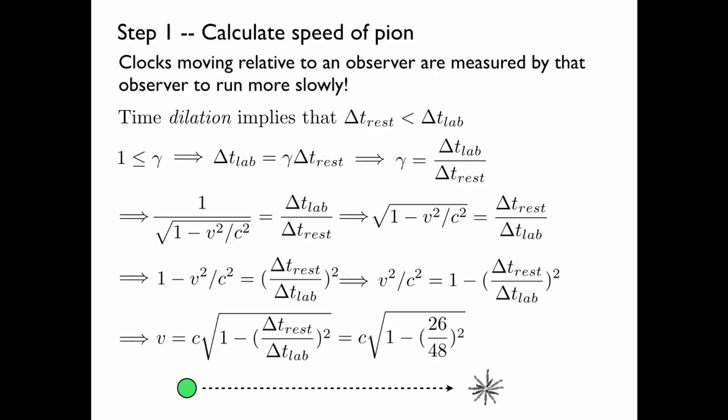Delta T rest is 26 nanoseconds. Delta T lab is 48 nanoseconds. They're both nanoseconds, so we don't have to convert to seconds or anything. And we get our velocity: 2.52 times 10 to the 8 meters per second.